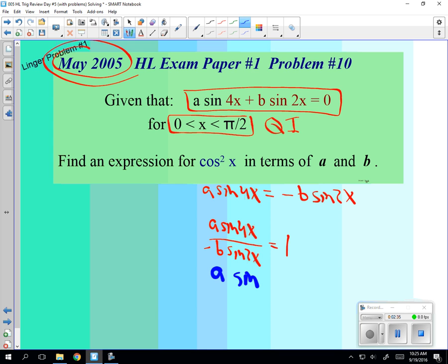a sin 4x equals 2a sin 2x cos 2x over negative b sin 2x equals 1. You okay with that?